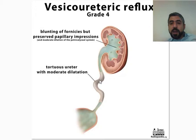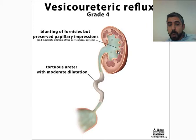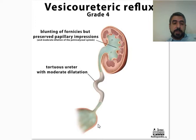Grade 4 involves reflux of urine all the way back into the kidney, with the fornices becoming blunted. In Grade 3 and below, the fornices are preserved and their normal shape is maintained. In Grade 4, the fornices are blunted, blown up, dilated, and have lost their normal shape, while the ureter becomes tortuous and moderately dilated with an abnormal tortuous appearance.